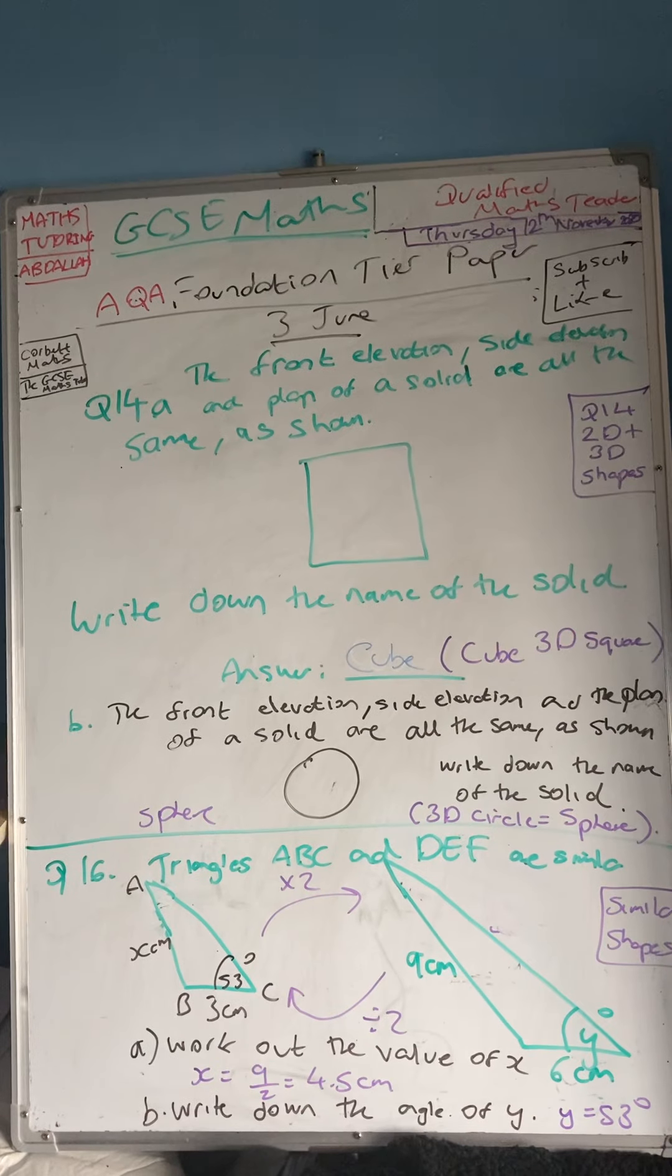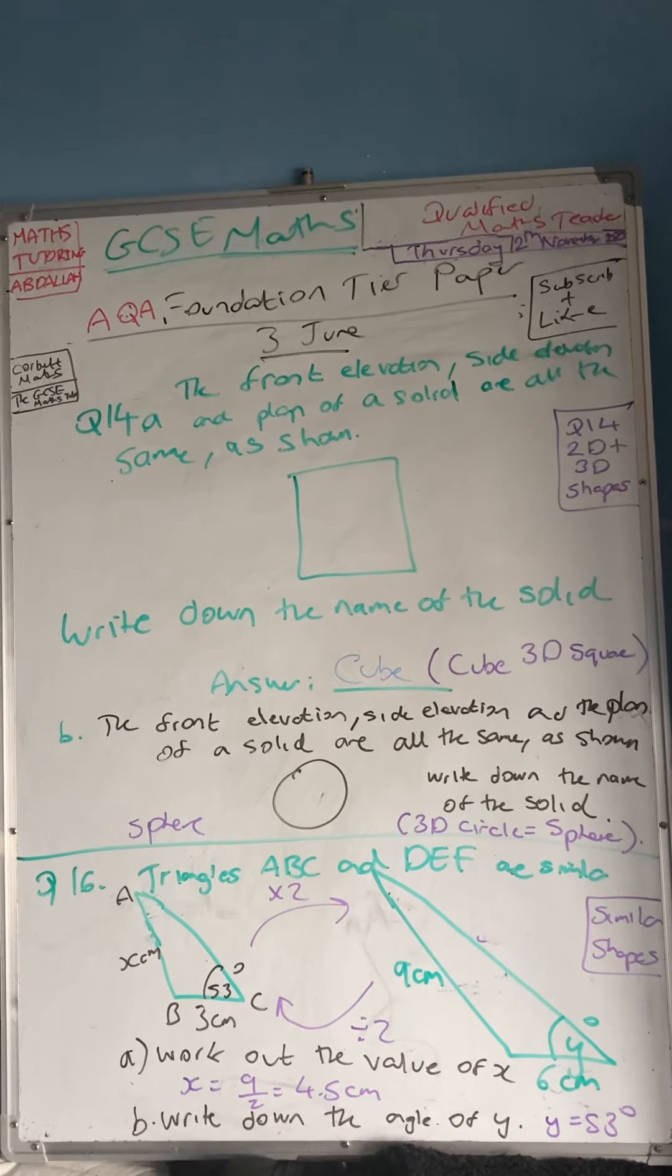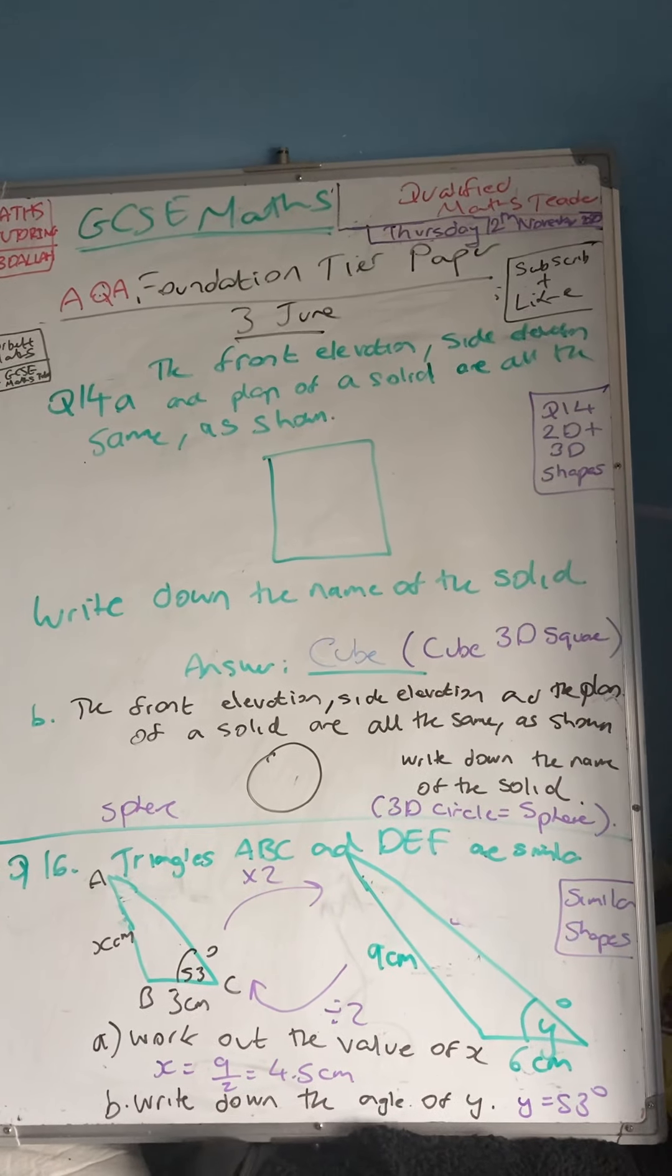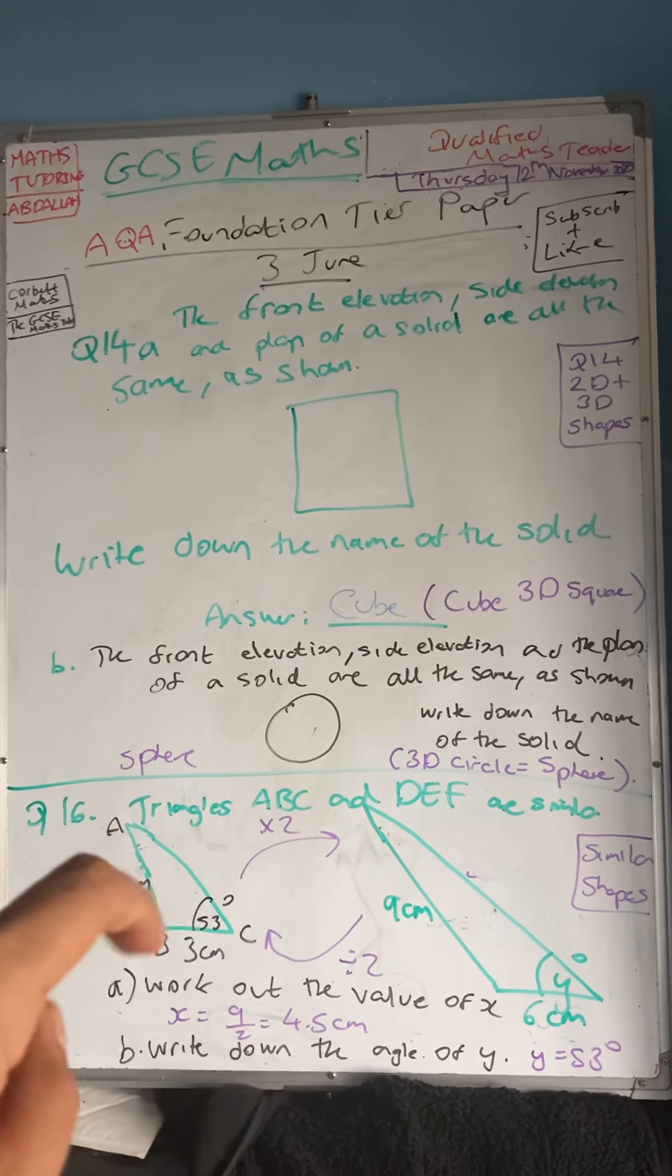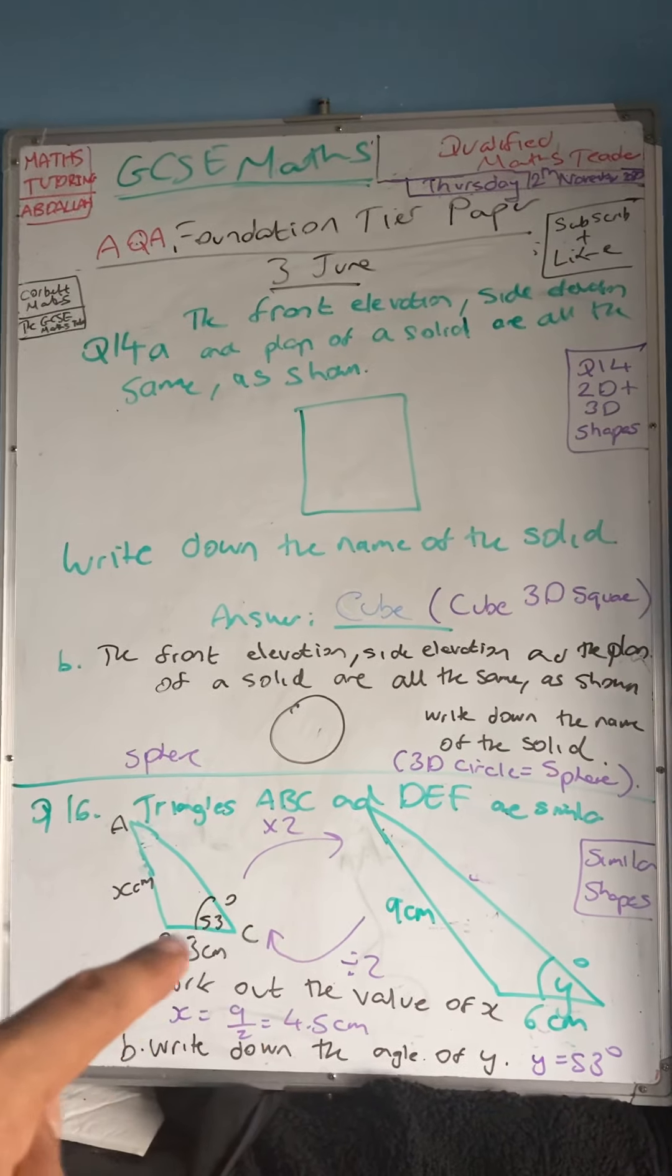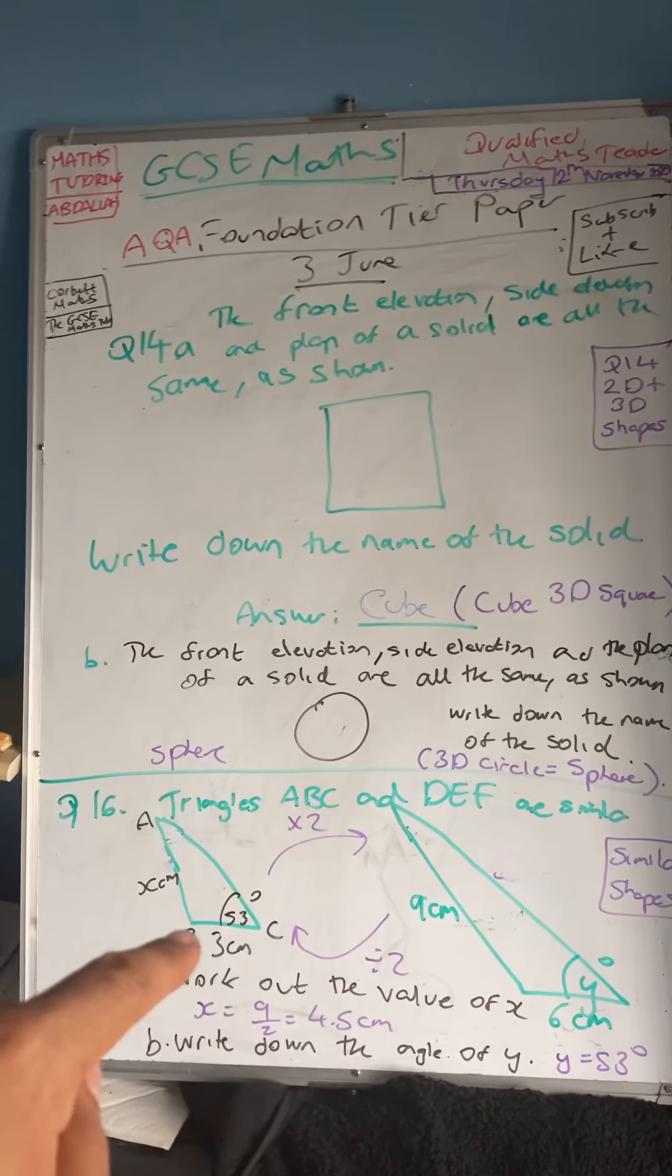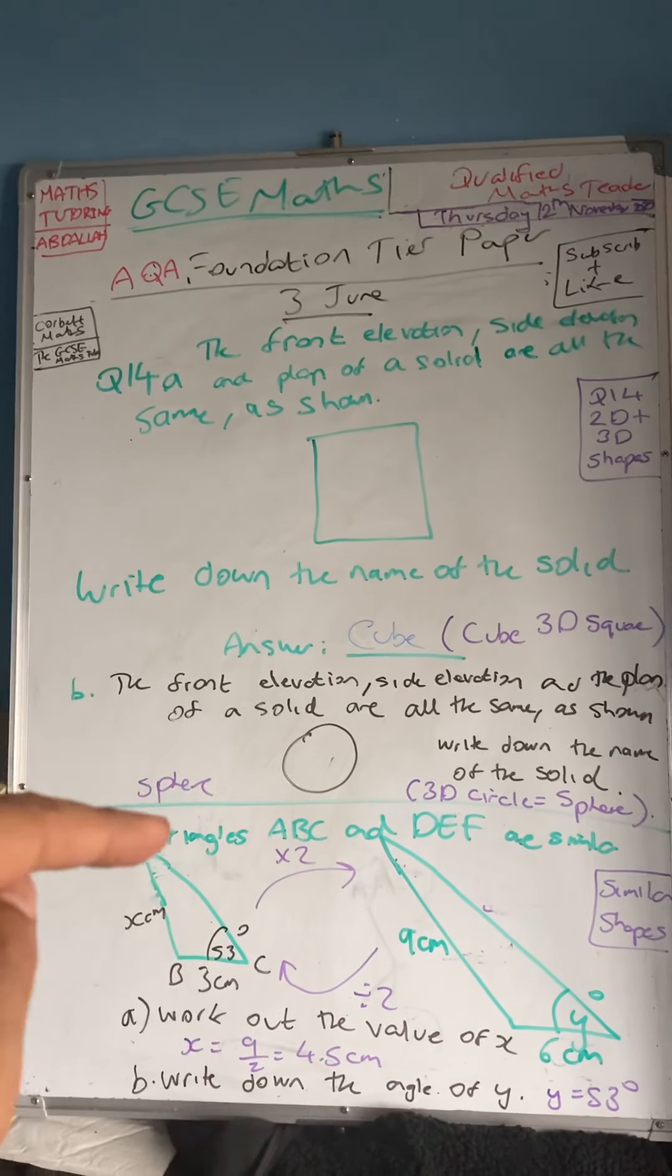Part A says work out the value of x. Similar shapes means that there is a scale factor that maps this shape onto this shape. We work it out by 6 divided by 3, divided by 2 is 3. So my scale factor is going to be divided by 2 this way and then times by 2.